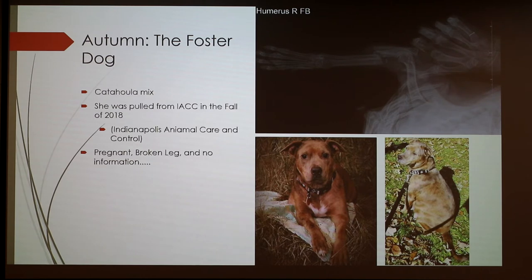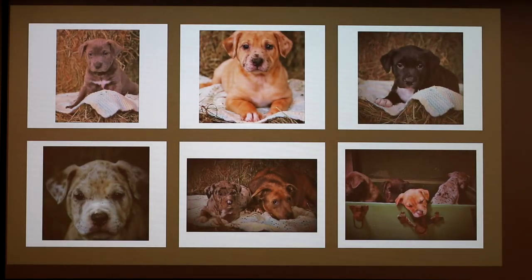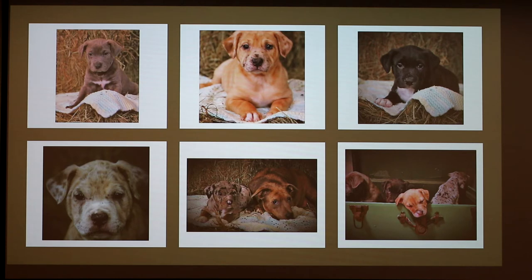The vet said November 3rd was the delivery date, and it ended up being November 14th. This is Autumn on the right — here she is pregnant, a little bulged out, and this is Autumn after having the puppies. She had six alive. One was a stillborn, and one passed away within 24 hours. As you can see in this picture, puppies are really hard to photograph — this one's looking at us, this one's leaning its head, this one's not facing the right direction.